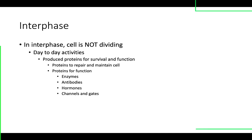Some cells will produce proteins like antibodies, which are used in immunity. Some cells produce hormones. Most cells are going to have proteins that act as channels and gates. So on a day-to-day basis, that's what the cell is doing.